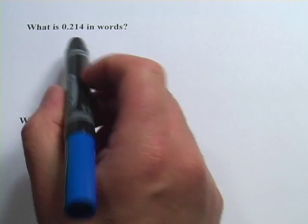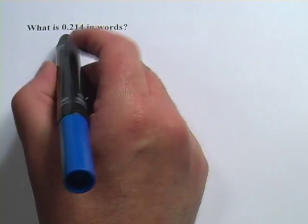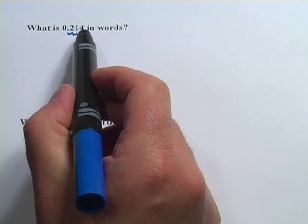Next problem. What is 0.214 in words? Well, let's look at the places. We have tenths, hundredths, thousandths. So our last one there is thousandths.